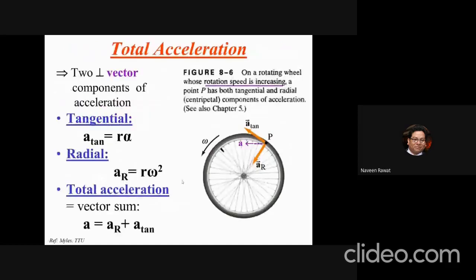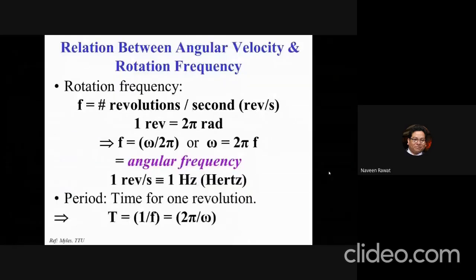When an object is doing both translational and rotational motion, we must consider the total acceleration, which is the sum of tangential acceleration and centripetal acceleration. We use the appropriate terms for the appropriate kind of motion. Remember, the rotation of the wheel may be accelerating — for example, a car that is speeding up — and in that case you must consider both terms.